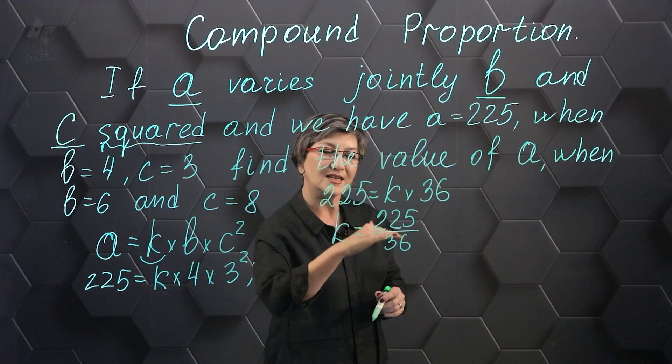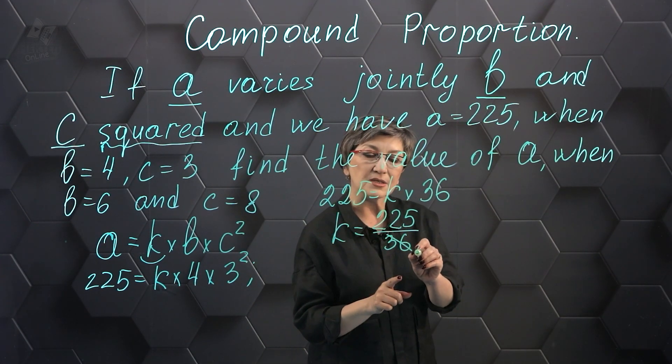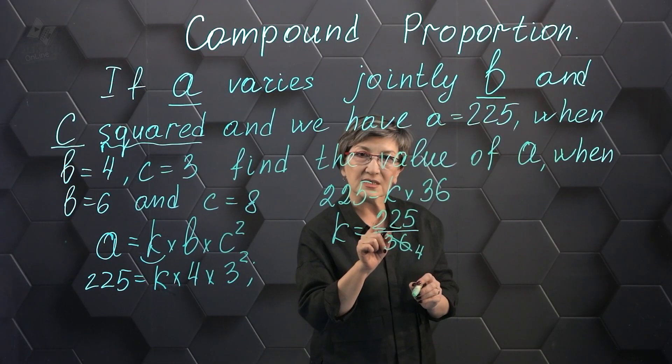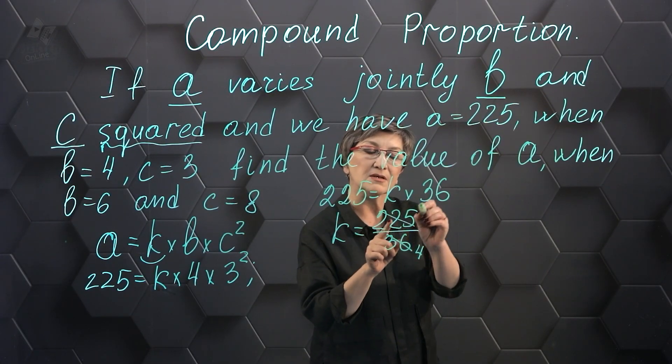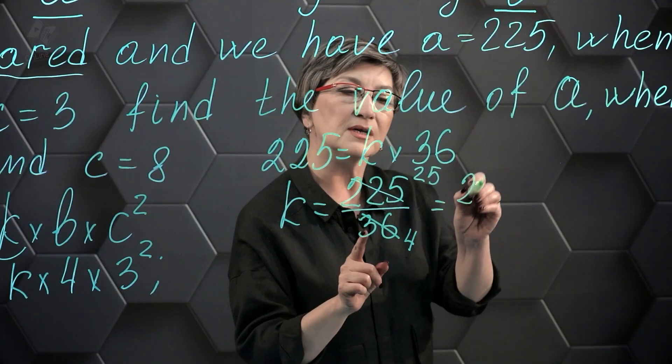Let's divide the numerator and denominator by 9. 36 divided by 9 is 4, and 225 divided by 9 is 25. k equals 25 fourths.